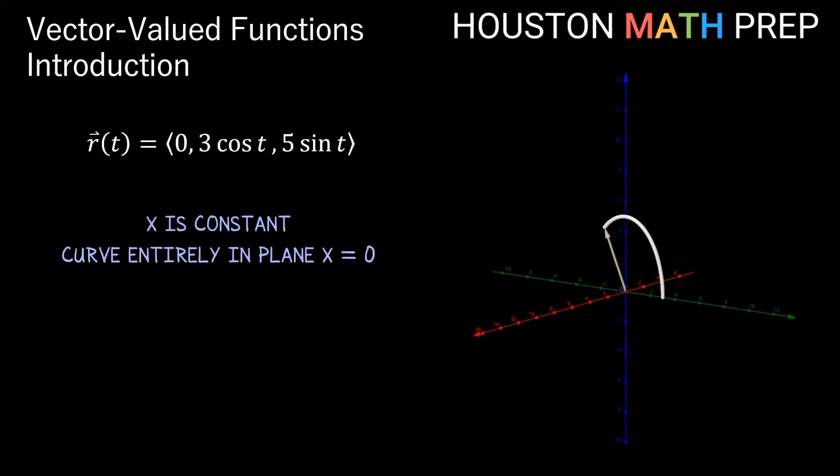Now looking at the y and z components together you might think this is another circular path in the yz plane, but because the coefficients 3 and 5 are different values, our path actually varies a bit more in the z direction than it does in the y direction. So this actually represents an ellipse instead of a circle.